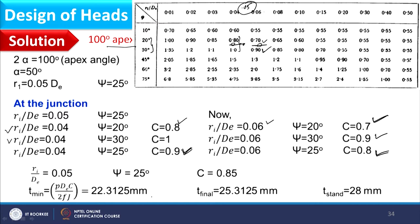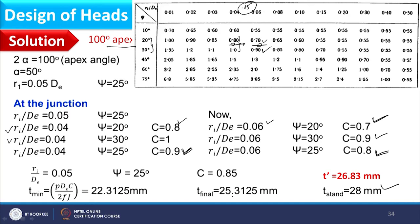Since T_minimum is less than 30 mm, corrosion allowance is added, giving 25.3125 mm. Because this is a knuckle section (a forming section), an additional 6% is added: 1.06 × 25.3125 = 26.83 mm. The standard thickness is then selected from table B1. This completes the thickness calculation at the junction with knuckle.